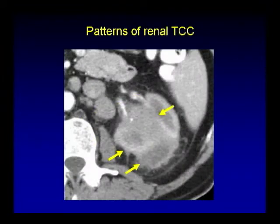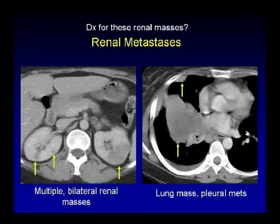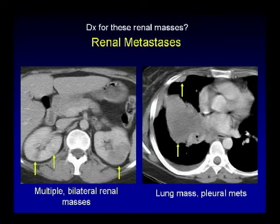Here's a case of an infiltrative mass involving the left kidney — another pattern of renal TCC. Here's another case with an ill-defined mass in the left kidney. It may represent renal cell carcinoma, but the infiltrative nature indicates you should include renal transitional cell carcinoma in the differential. Now here we see multiple ill-defined masses in both kidneys. Differentials: multifocal RCC, metastasis, or lymphoma. Look higher up — there's a large lung mass and pleural metastasis, so this is renal metastasis.